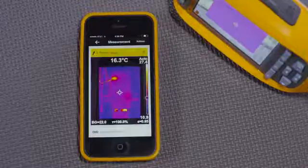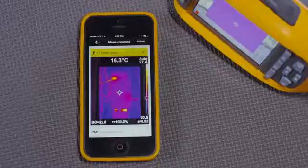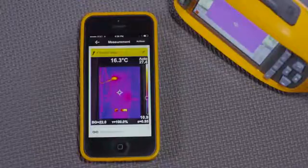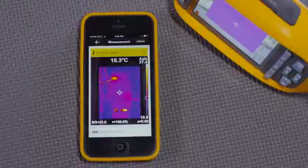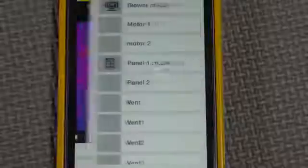What I have here is a thermal imager paired with the Fluke Connect app. I've taken several images and saved them. I'll associate this thermal image with a piece of equipment, like panel 1, and save it.